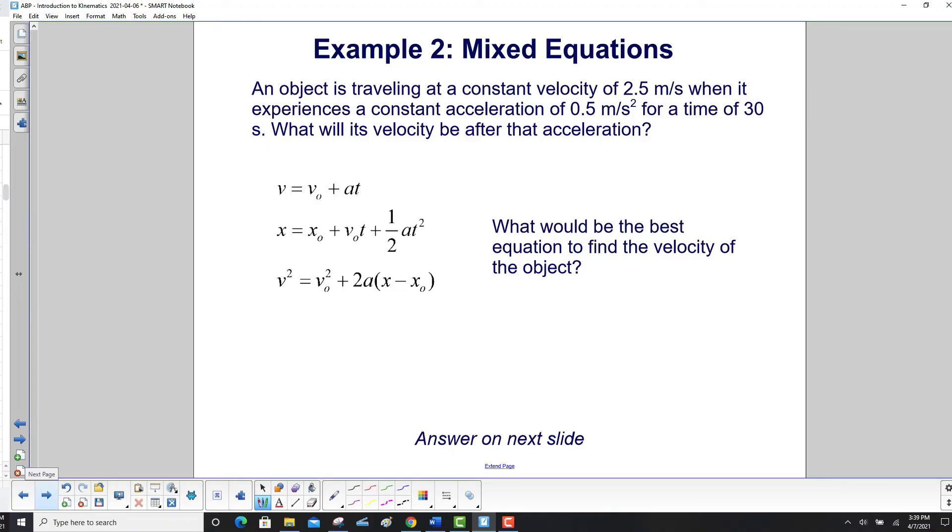Second example. An object is traveling at a constant velocity of 2.5 meters per second when it experiences a constant acceleration of 0.5 meters per second squared for a time of 30 seconds. What will its velocity be after that acceleration? What would be the best equation to find the velocity of the object?